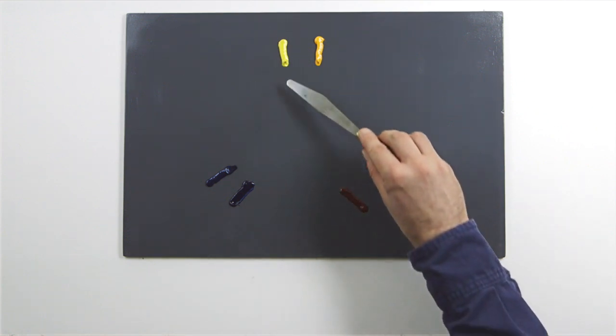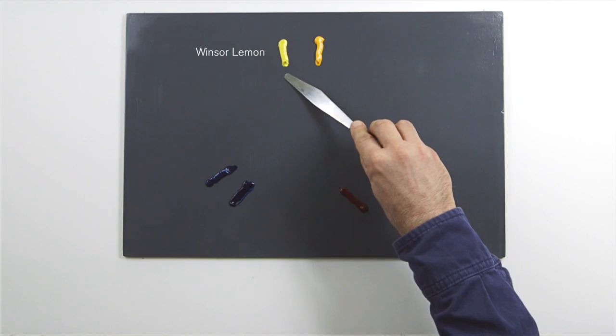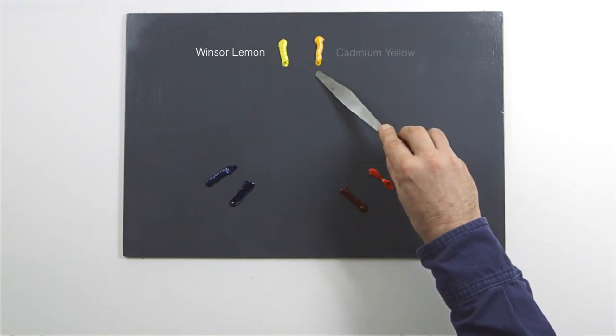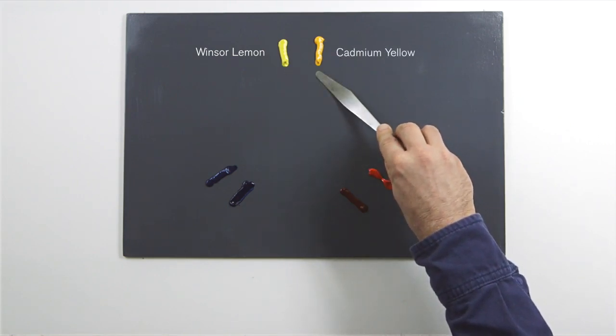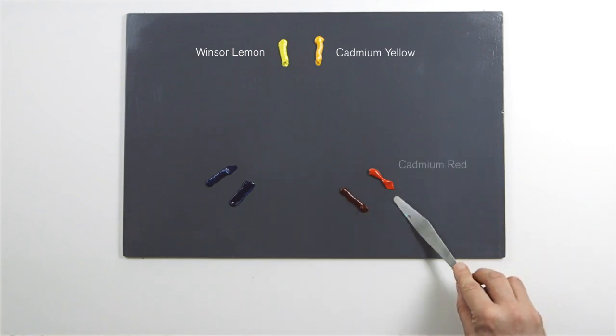Starting with the yellows, you can see the Winsor lemon has a green bias, whereas cadmium yellow has an orange bias, as does cadmium red.